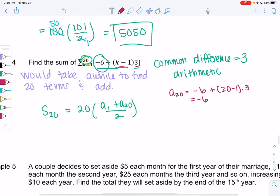Or negative 6 plus 19 times 3. 19 times 3 is 57 minus 6, which is 51. So my 20th term would be 51.